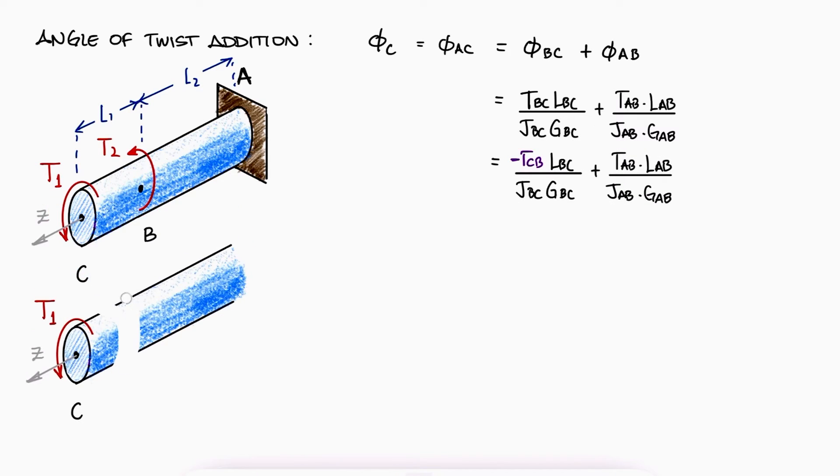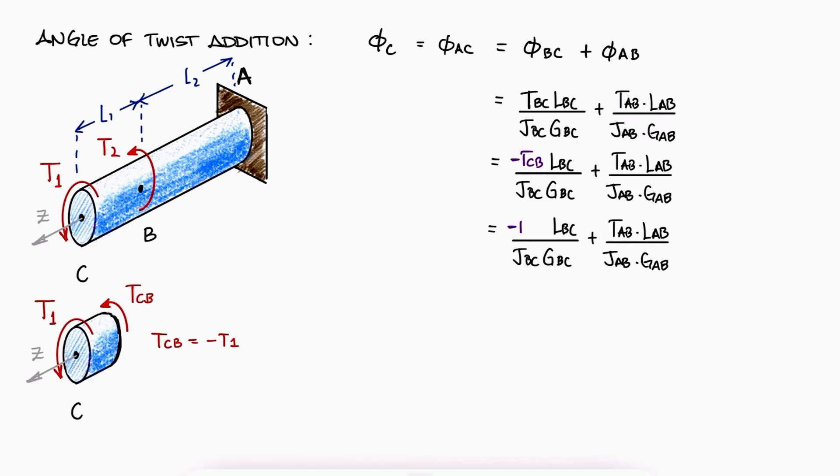With the first cut, we can find TCB from C to B, and assuming a positive value for it, like we always should do, we find that TCB is minus T1.